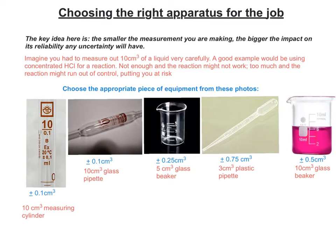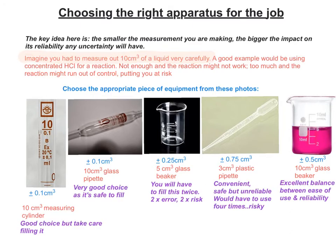Take a couple of moments and see if you can come up with a couple of pieces of equipment that would be appropriate for that job. The more times you have to use a piece of equipment, the more times you multiply the error and the more times you risk spilling it — something especially important with concentrated HCl. The basic message is: be quite picky about the piece of equipment you're using. Normally in a chemistry lab it would be provided for you at A-level, but at university you'd be expected to choose the appropriate piece of equipment depending on the level of reliability you require.